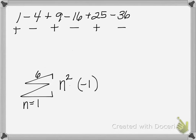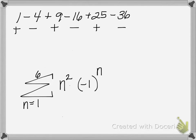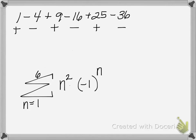To create alternating signs, we raise negative 1 to the power of n, and let's see what happens. Substituting n equals 1: we get 1 squared times negative 1 to the first power, which gives negative 1 — a negative first term. For n equals 2: we get 2 squared times negative 1 to the second power; the exponent is even, giving positive 4 for the second term. So with an exponent of n, the sign pattern is negative first, positive second, negative third — the alternating signs, but in the wrong order. We want to start with a positive number.